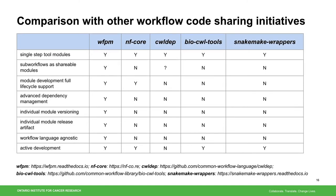Although to our knowledge there is no other workflow package management solution available, some workflow code sharing initiatives do exist, such as nf-core, CWL-Dev, BioCWL Tools, and Snakemake Wrappers. Here we compare them with WFPM, taking into account eight different features: single-step tool module, sub-workflow support, development full lifecycle support, advanced dependency management, individual module versioning, individual module release artifact, being workflow language agnostic, and active development. As shown here, WFPM provides the most feature completeness and is in active development.